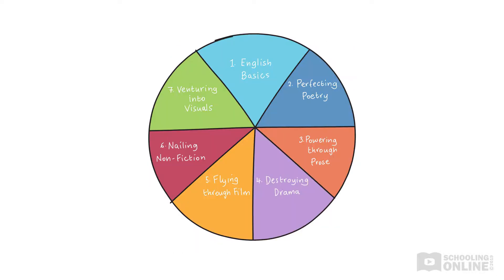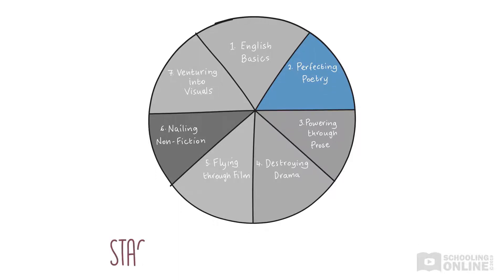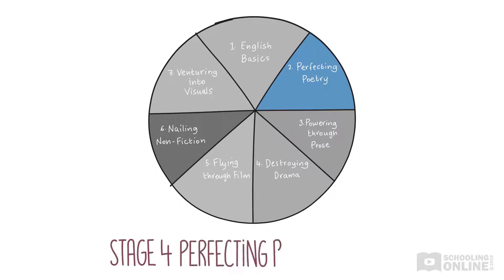This video is part 2 of our 7-part Stage 4 English Essentials series that introduces you to a range of important skills that you'll need as you start out in Stage 4 English. Today, we'll be looking at Perfecting Poetry, Lesson 1.